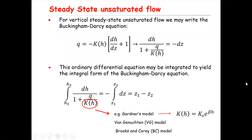In this lecture I'm going to talk about steady state unsaturated flow, and this is part of our bachelor level course on groundwater hydrology. In the previous lecture we discussed the Buckingham-Darcy equation, expressed as q equals minus K(h) times (dh/dz plus one), where K(h) is the unsaturated hydraulic conductivity.